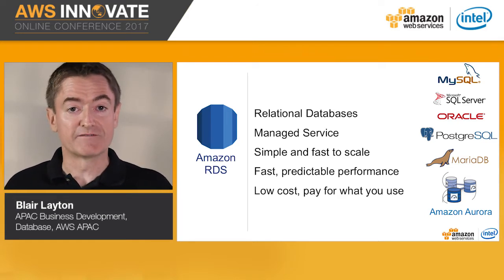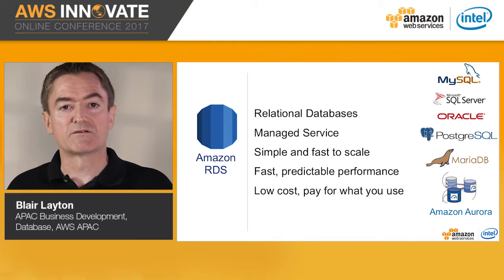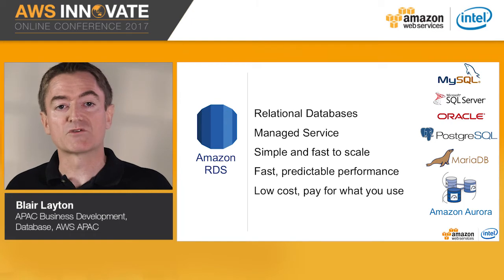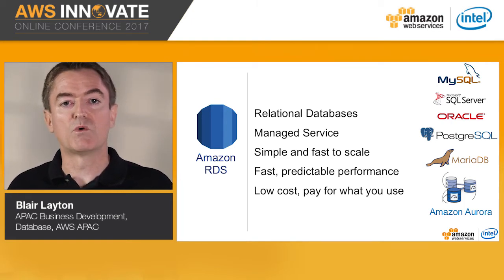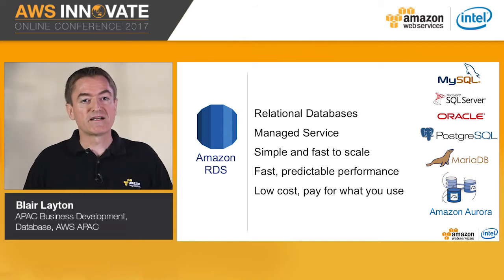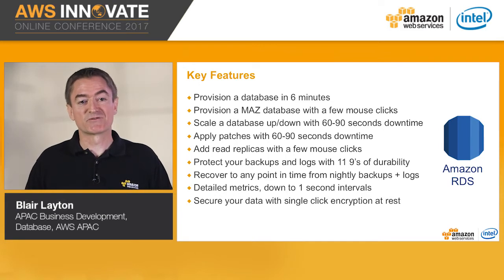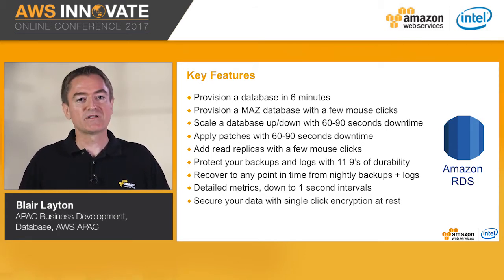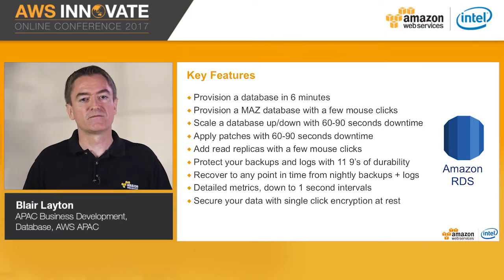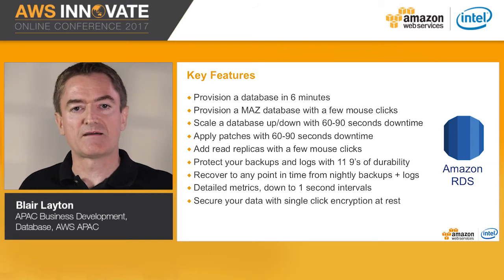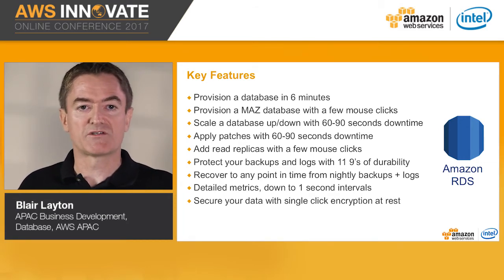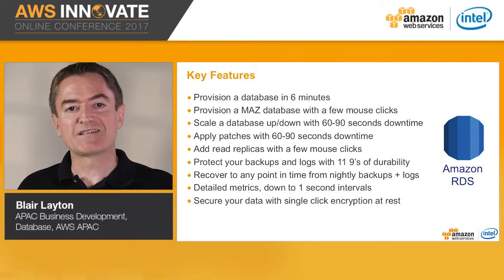RDS, given its name, is obviously focused on relational databases. It offers a managed service for MySQL, MS SQL Server, Oracle Database, Postgres and MariaDB. Amazon Aurora is Amazon's own database platform and comes in two editions: one with MySQL compatibility and the other with Postgres compatibility. As a managed service, RDS is simple and fast to scale, gives you fast predictable performance, and you only pay for what you consume. Key features include the ability to provision a database in about six minutes, and you can provision a multi-AZ database with a few mouse clicks — configuring a master database in one availability zone and a standby in another. Data is replicated synchronously, and if there is a failure in hardware, networking or storage, RDS will automatically fail over to the standby instance with about 60 to 90 seconds of downtime.